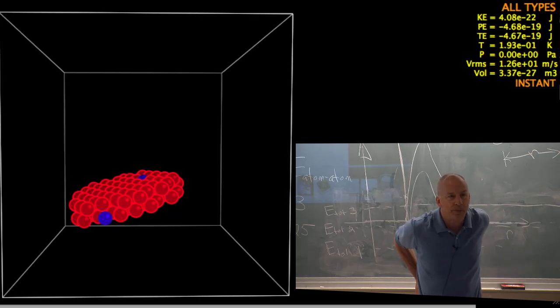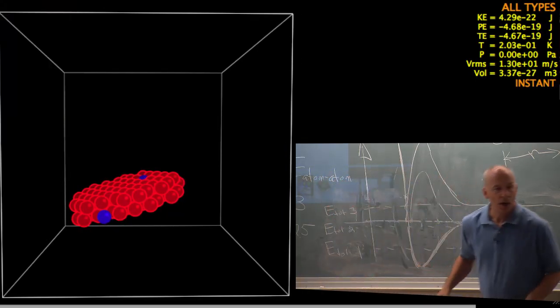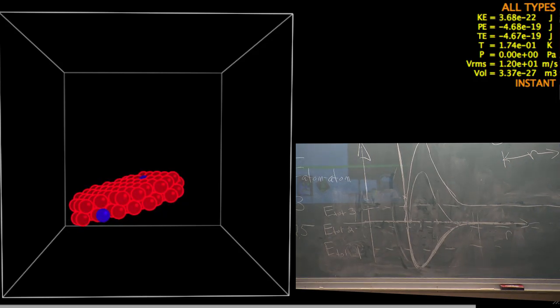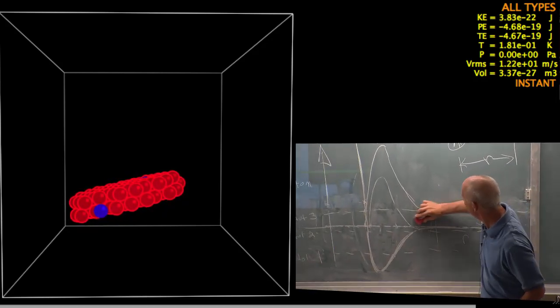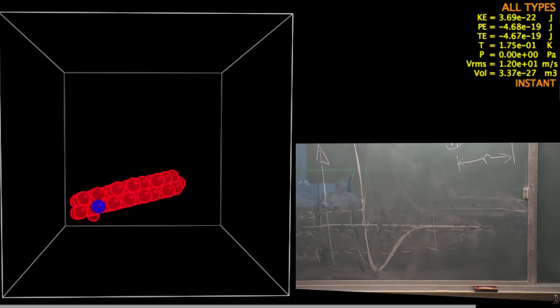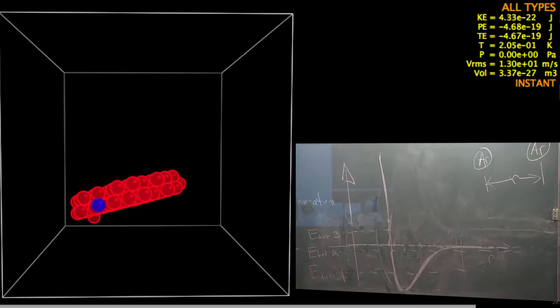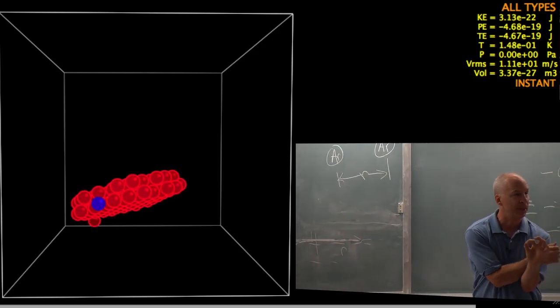This is a picture of a hundred atoms. All pairs of atoms have this kind of potential between them. Every atom attracts every other atom with this kind of potential energy.